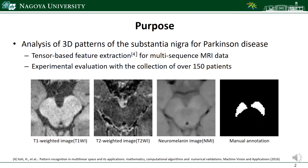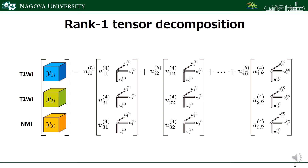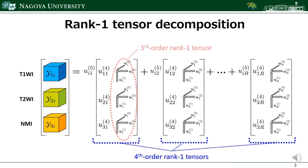In the proposed method, we focus on the substantia nigra's interior intensities. We decompose a set of three sequences into a linear combination of fourth-order rank-1 tensors. In each tensor, third-order rank-1 tensors express basic three-dimensional patterns, and fourth-order rank-1 tensors express a basic pattern of the set of three sequences. Therefore, using only coefficients, we can express a pattern of the sets.